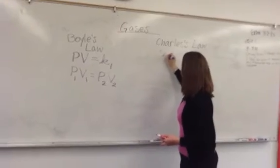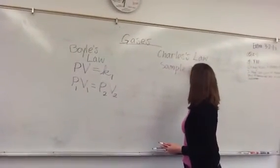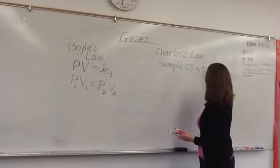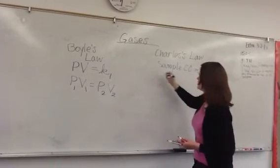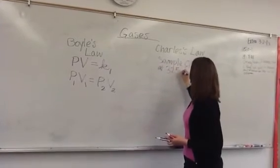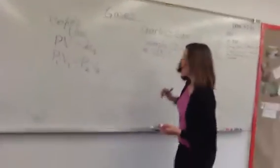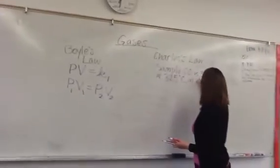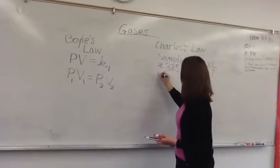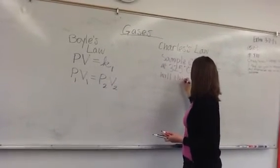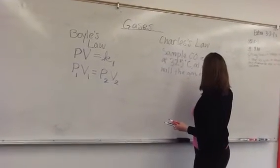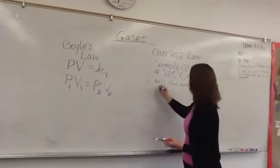Suppose you have a sample of CO, carbon monoxide. It is 3.20 liters at 325 degrees Celsius. At what temperature will the gas occupy 1.54 liters?